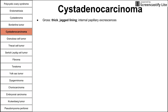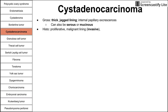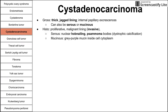The malignant tumors — cystadenocarcinomas — grossly look like thick, jagged lining with internal papillary excrescences. These can be classified as serous or mucinous. On histology, they are proliferative with malignant invasive lining. The serous variant has nuclear hobnailing, where the nucleus pops out to the side of the cell into the cavity. You can also see psammoma bodies, which are dystrophic calcifications. The mucinous variant has a gray-purple mucin inside the cell cytoplasm, which is characteristic.